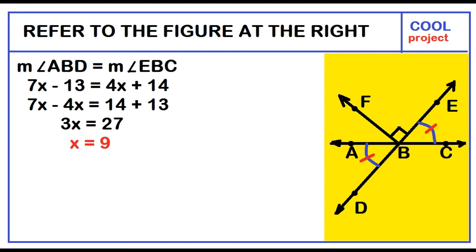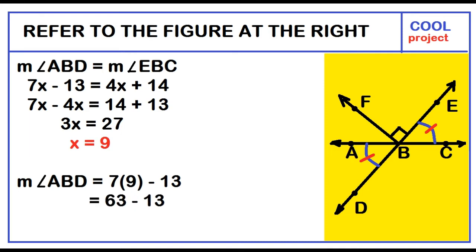x equals 9. To find the measure of angle ABD, just substitute 9 for x. 7 times 9 minus 13 is equal to 63 minus 13. The measure of angle ABD is equal to 50 degrees.